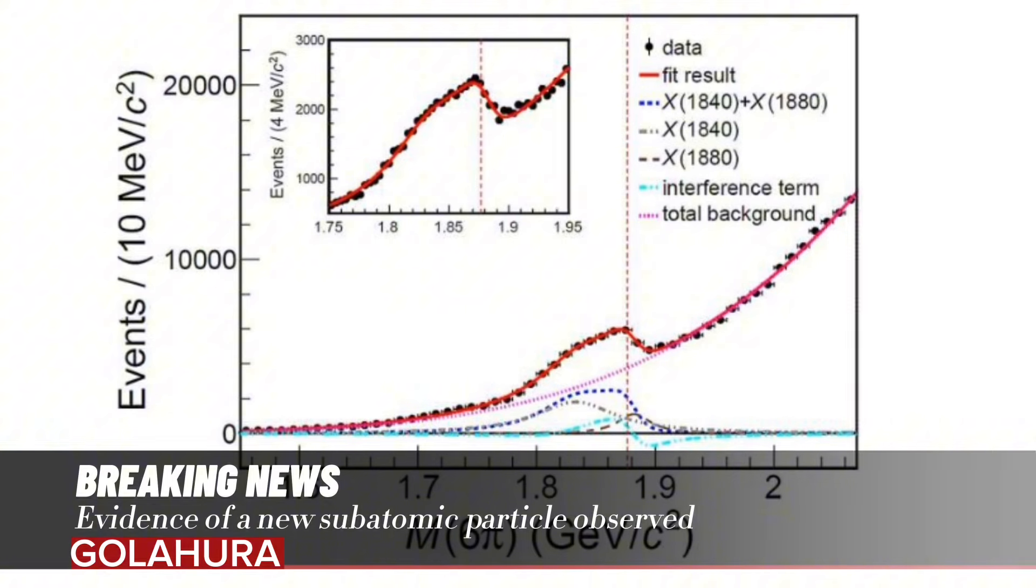Therefore, the BESIII experiment performed an investigation on the 3(π+π-) mass spectrum with 10 billion J/ψ events, which is about 45 times larger than the subset data sample used in the previous measurement.